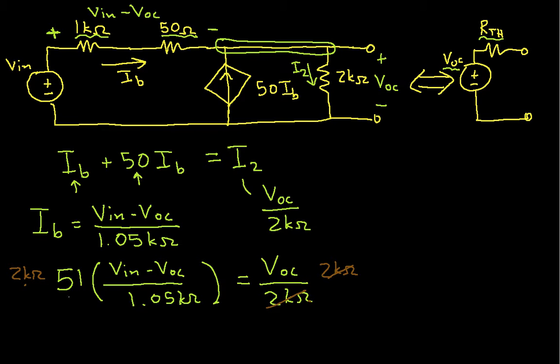And this guy will cancel this guy. And the 2k ohms times the 51 divided by the 1.05k ohms gives me, when I compute it, we have 2000 times 51 divided by 1050. So this gives me 97.14 times VIN minus VOC is equal to VOC.